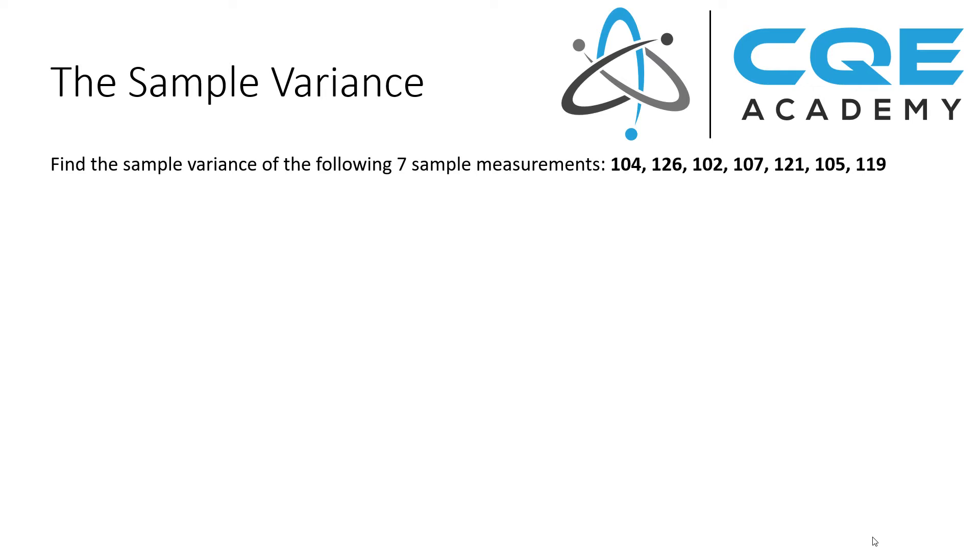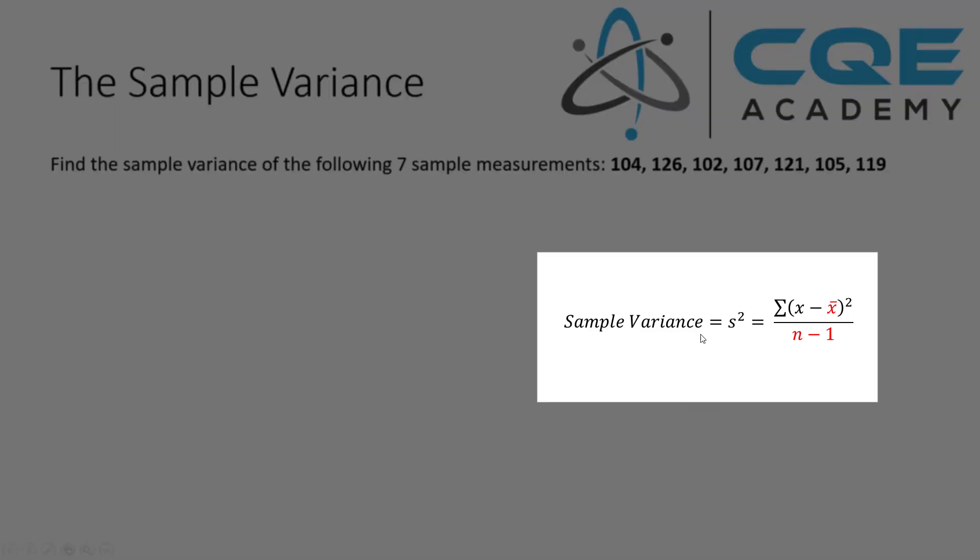In the problem statement, it's very clear that the seven data points we're analyzing are samples from a population. Those sample values are 104, 126, 102, 107, 121, 105, and 119. Let's refresh ourselves on the sample variance equation. The sample variance s squared equals the sum of x minus x bar squared divided by n minus 1. By the way, anytime you see this symbol, it means sum.